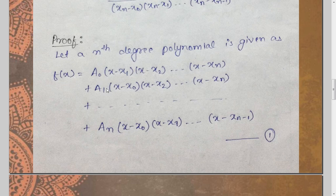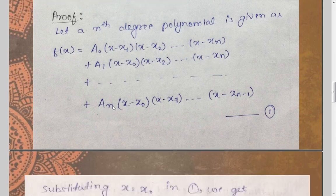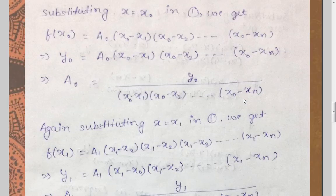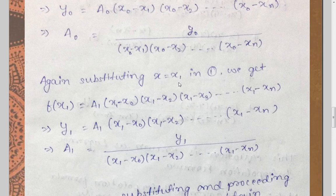In general, the base of a determines which bracket term is missing. So for a₀, x₀ is missing from the bracket terms. For a₁, x₁ is missing from all bracket terms. When we have aₙ, xₙ is missing and the expression is formed up to xₙ₋₁. What we do here is substitute all the x observation values one by one to obtain the values of the a coefficients.